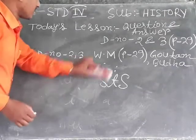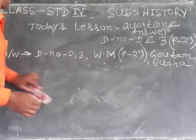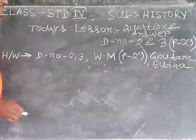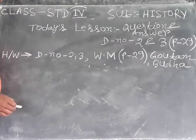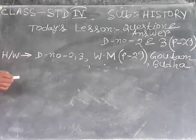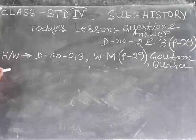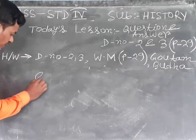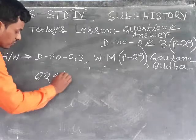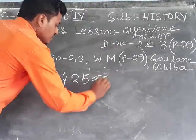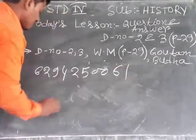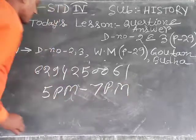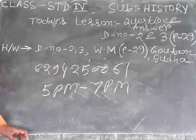Today's homework, back on 2 and 3, write and memorize page number 29 both on Buddha. And if you have any problem, give me contact through my phone number 6294250061, 5pm to 7pm. Namaskar.